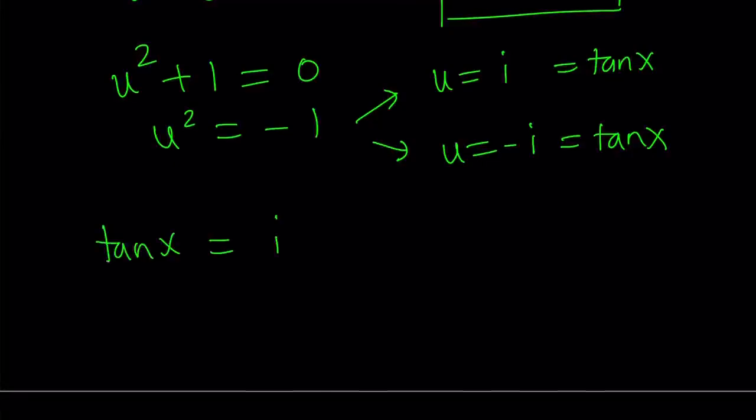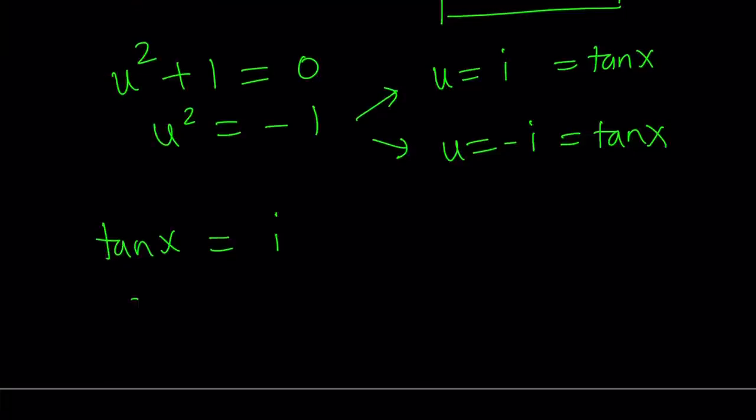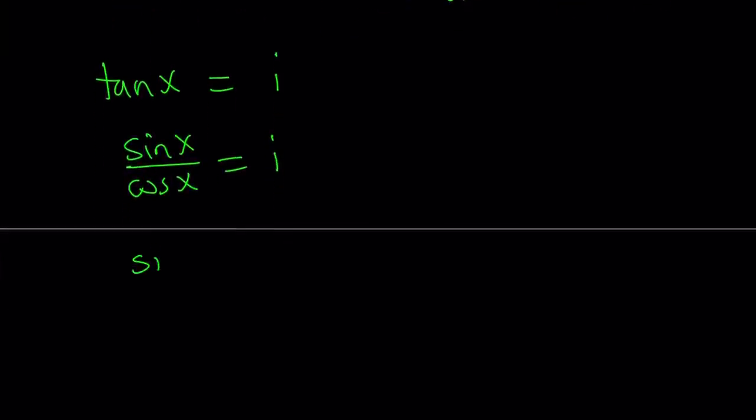I'm just going to take the case of i and negative i is kind of similar. It's probably easier. However, you can do something similar to that. So I'm going to write this as sine x over cosine x equals i. And then I would like to multiply both sides by cosine x, you know, the usual cross multiplication thingy. Now, if you've ever looked at Euler's formula, it is just amazing.